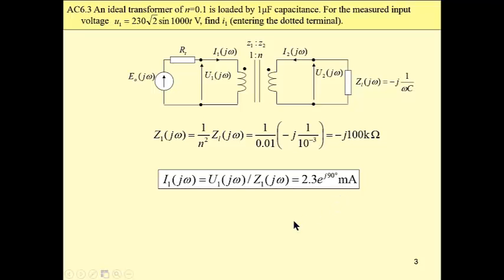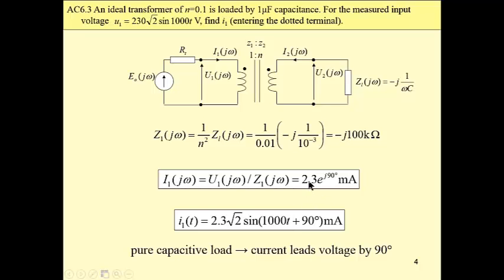In time domain, we have to multiply this root mean square value by square root of 2. Phase angle is 90 degrees. Obviously, we have the same frequency as for the voltage waveform, and as we have a pure capacitive load, this current leads voltage by 90 degrees. This completes this very simple task.